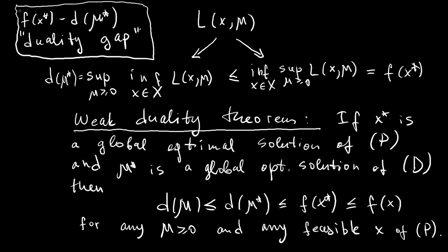When the duality gap is zero, we can find the optimal primal objective value by solving the dual problem. Recall that the dual is a concave maximization problem, equivalent to a convex minimization problem. Even when the duality gap is positive, the dual still provides a non-trivial and very useful lower bound on the optimal objective value of the primal problem.